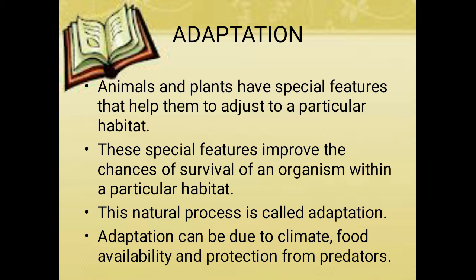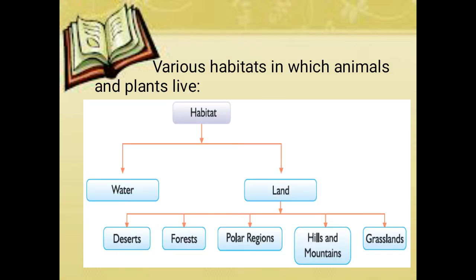It might be due to climate, climatic conditions — whether the climate may be hot or the climate may be cold, anything. And food availability and protection from its predators. So how has the habitat been divided? It has been divided as water and land, and the land is further divided into desert, forest, polar region, hills and mountains, and grasslands.